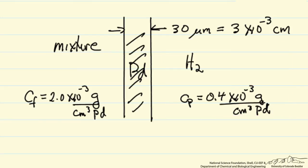And we are given these two concentrations. Now keep in mind these concentrations are within the palladium right at the surfaces, and they are obtained by having a certain concentration of hydrogen, for example on the feed side, and having some equilibrium relationship between the hydrogen and the mixture and how much is absorbed within the palladium.